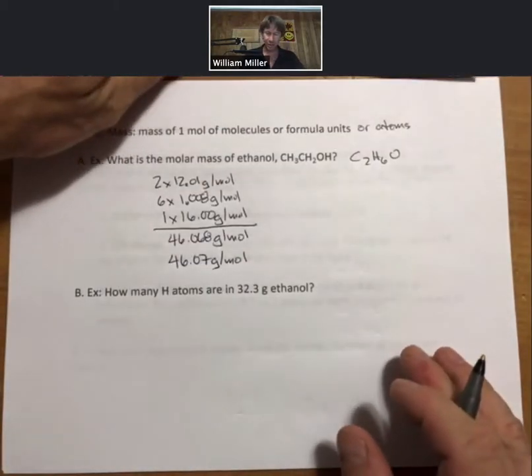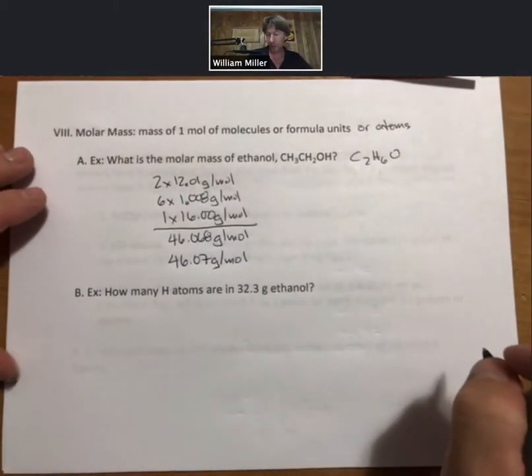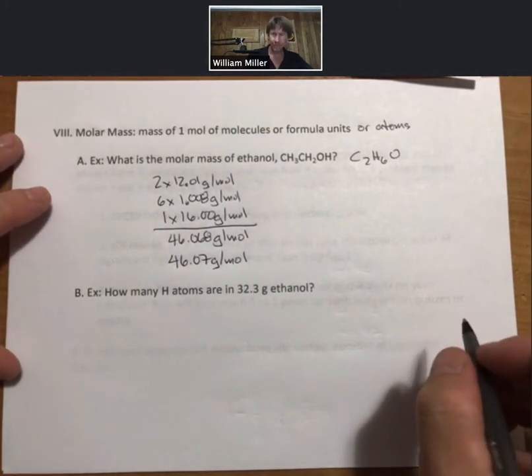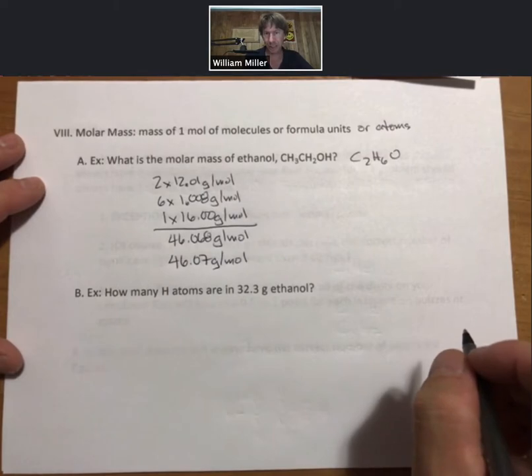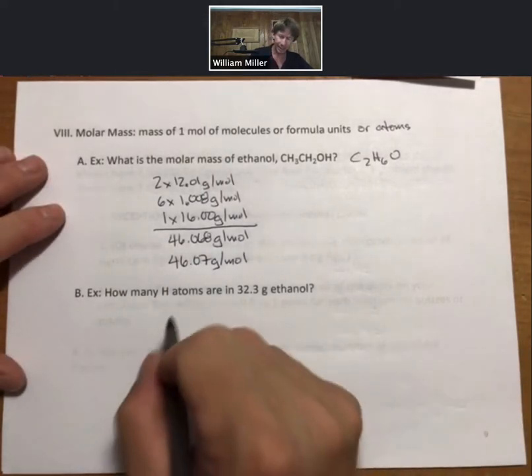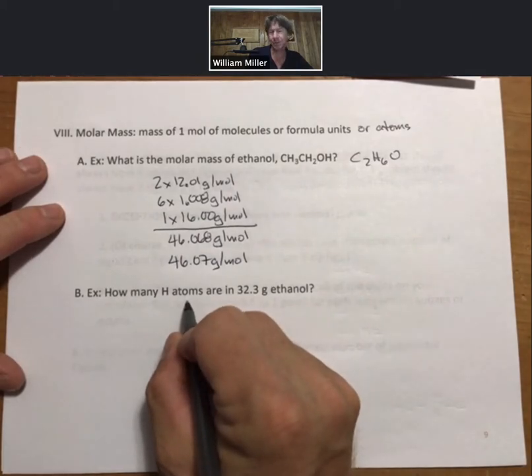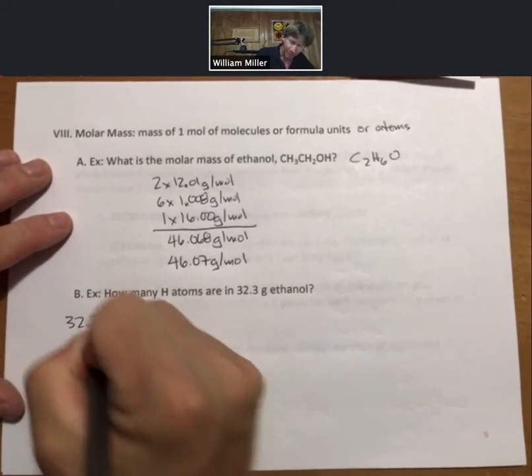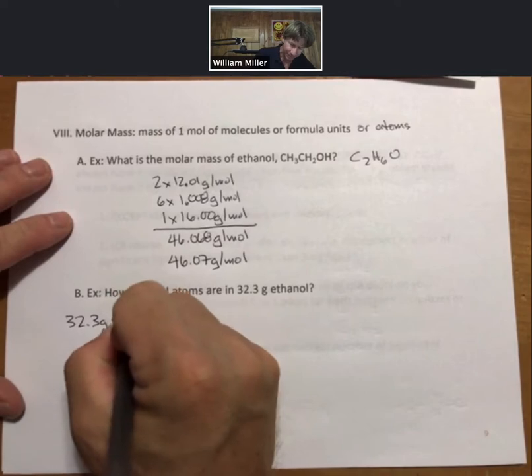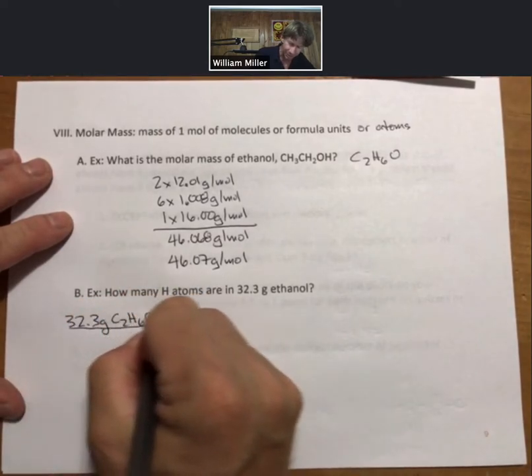Next question, we're going to ask is how many hydrogen atoms are in 32.3 grams of ethanol? When you see it on the homework it'll say how many hydrogen atoms using Avogadro's number, which we're about to see. I want to be specific, I'm not looking for moles of atoms here, I'm looking for actual numbers of atoms.